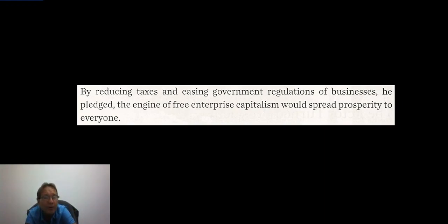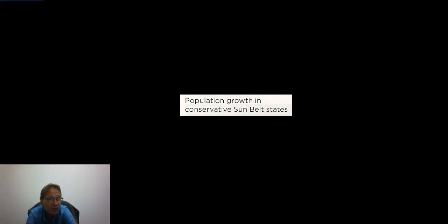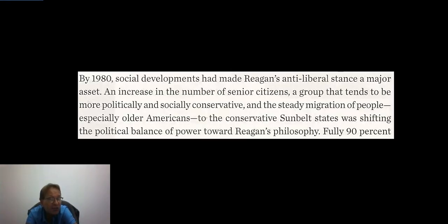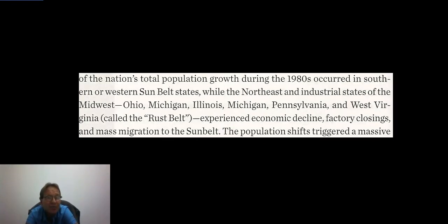He pledged that the engine of free enterprise capitalism would spread prosperity to everyone. A big factor in the rise of the New Right was the huge population growth in the conservative Sunbelt states. By 1980, an increase in the number of senior citizens — a group that tends to be more politically and socially conservative — and the steady migration of people, especially older Americans, to the conservative Sunbelt states was shifting the political balance of power toward Reagan's philosophy. Fully 90 percent of the nation's total population growth during the 1980s occurred in the southern or western Sunbelt states.